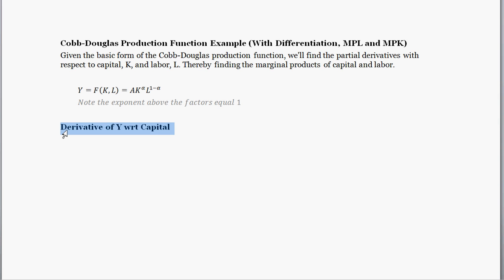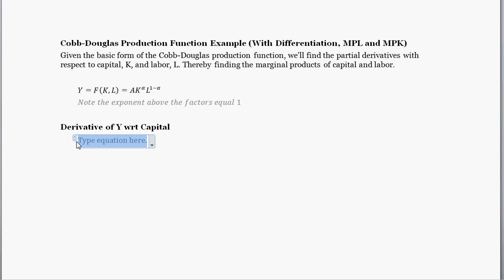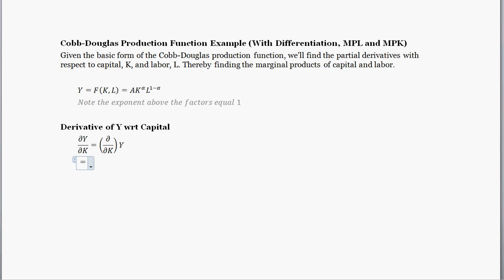Let's start by taking the derivative of the production function with respect to capital. What we're looking for is how production changes — that's the partial derivative symbol, which stands for partial. So it's how production changes, di y, given a change in capital. We're going to take the partial with respect to capital and do this transformation of the production function.